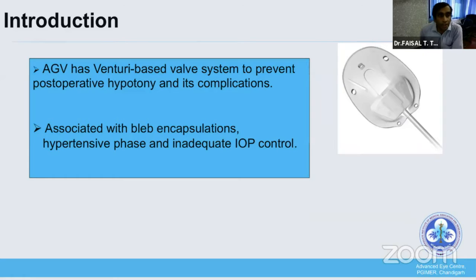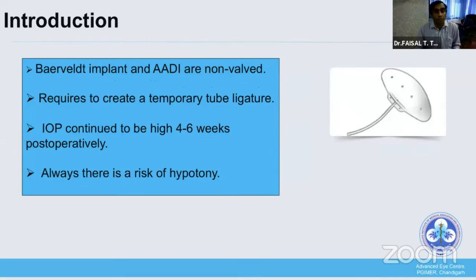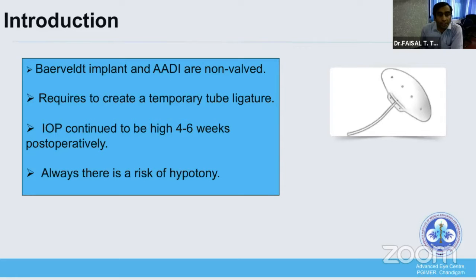As Madam already mentioned, the AGV has a unidirectional Venturi valve system which prevents postoperative hypotony and its related complications, but it is also associated with bleb encapsulation, hypertensive phase, and inadequate IOP control at times. Whereas in Baerveldt and ADI, which are non-valve devices, the surgeon must create a temporary ligature during surgery, and IOP remains high for at least four to six weeks postoperatively, with an ongoing risk of hypotony.